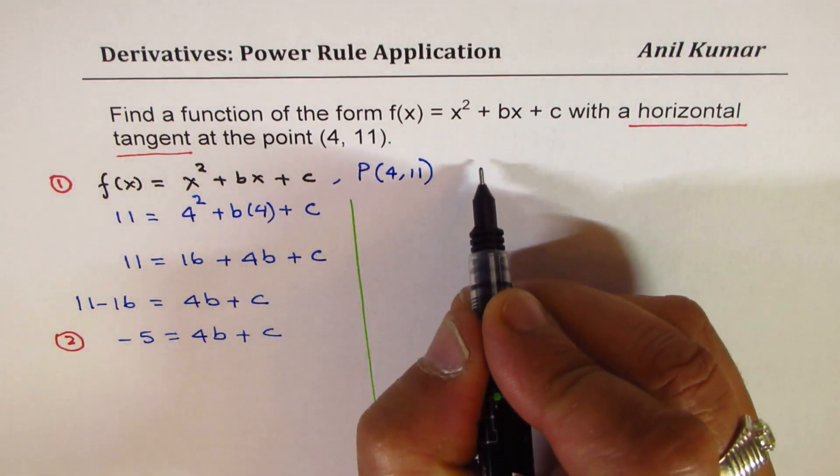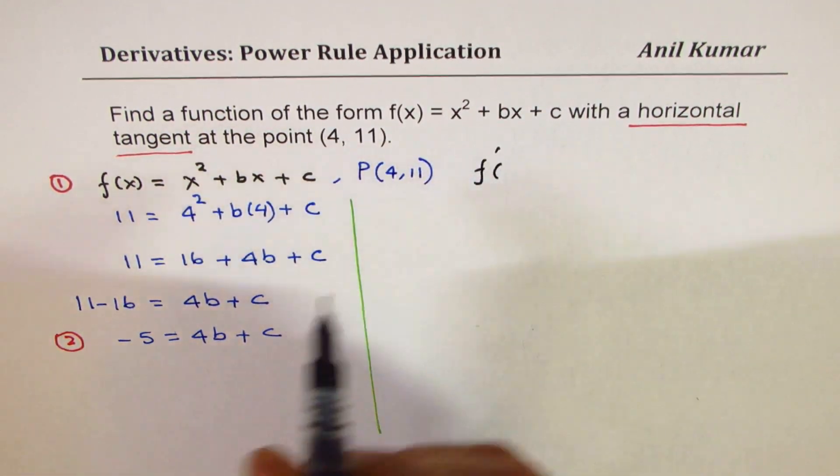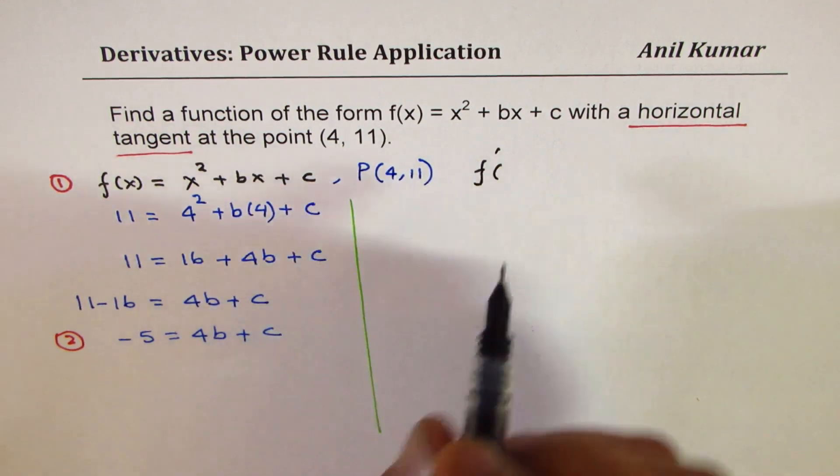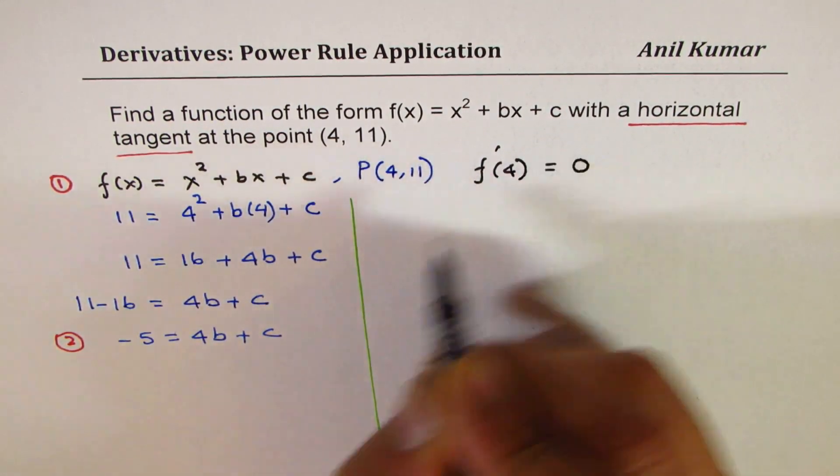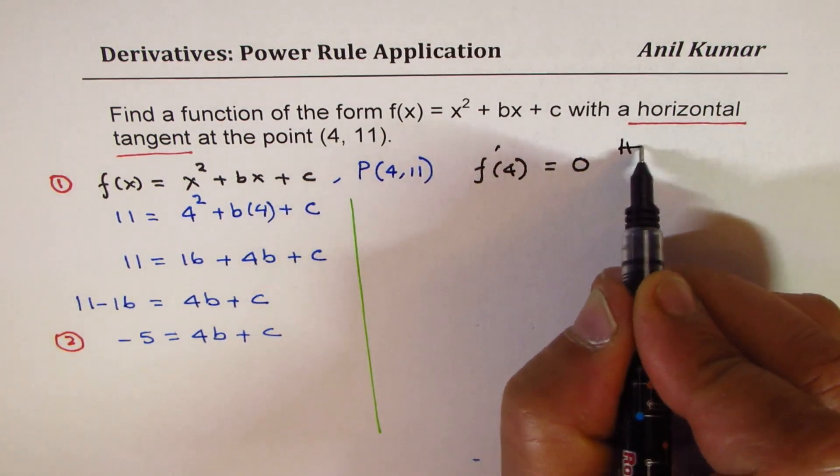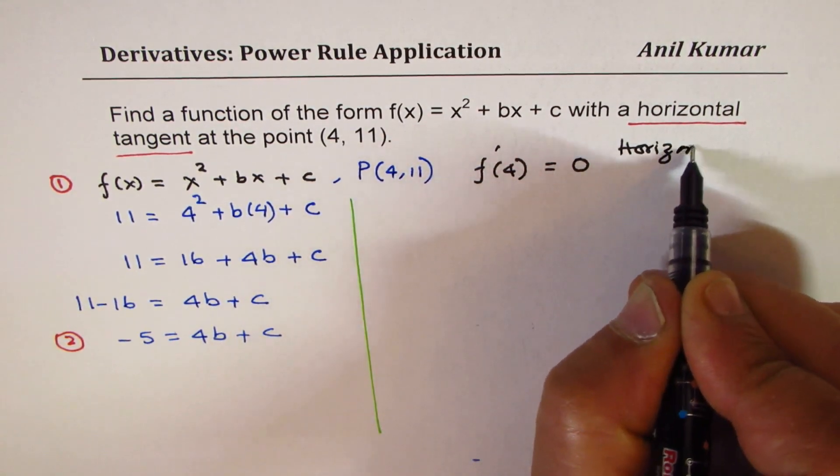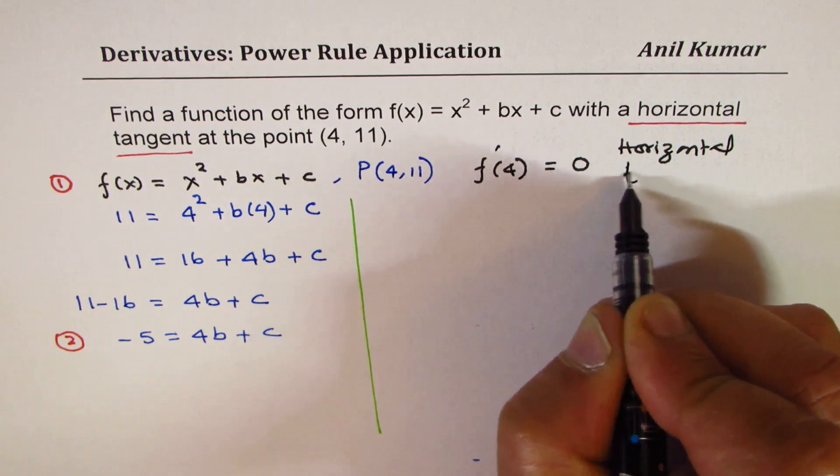Horizontal tangent means that the derivative at the given point, which is 4, is equal to 0. So that means horizontal. Is that clear?